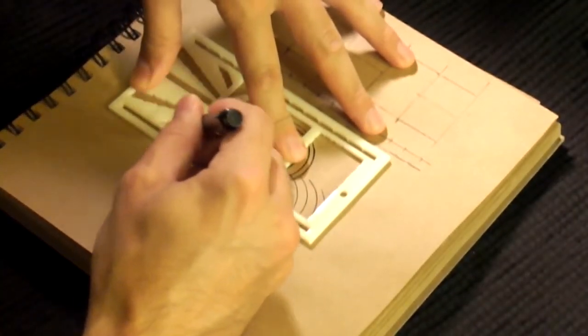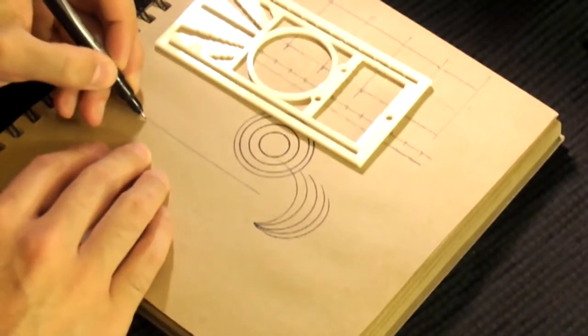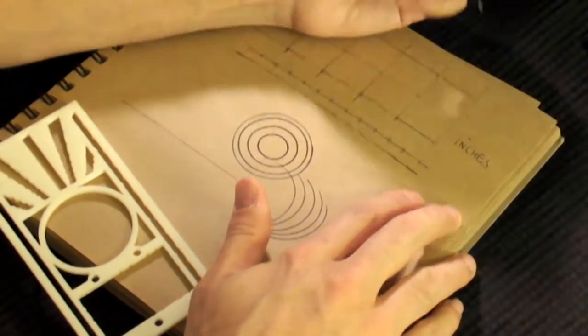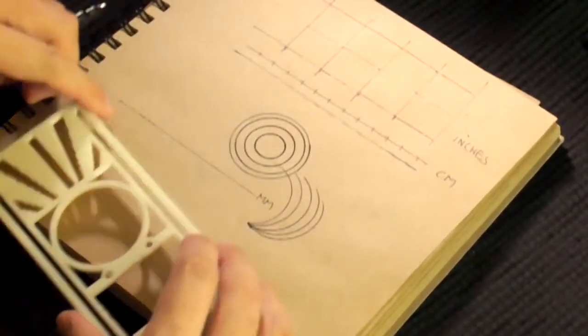There are three units of measurements. The very small one which I'm drawing now is millimeters, and the other two are inches for the larger one and centimeters for the one in the middle.